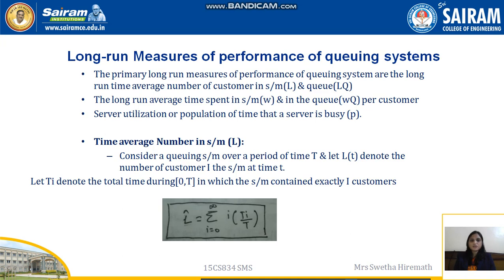We are now in the last topic of our second module's first part. Here I will explain the long-run measures of performance of the queuing system. The primary long-run measures of performance are: L — the long-run time-average number of customers in the system; Lq — the average number of customers in the queue; W — the long-run average time spent in the system; Wq — the waiting time in the queue per customer; and p — the server utilization, or proportion of time the server is busy.